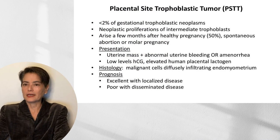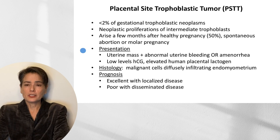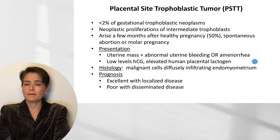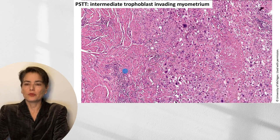The final entity is the placental site trophoblastic tumor, which is quite uncommon — less than 2% of gestational trophoblastic neoplasms. It is a neoplastic proliferation of intermediate trophoblasts, and like choriocarcinoma, may arise a few months after a healthy pregnancy, spontaneous abortion, or molar pregnancy. Patients typically present with a uterine mass, abnormal uterine bleeding, or amenorrhea. There may be a small increase in HCG, but the key diagnostic marker is human placental lactogen. Microscopically, we see malignant cells diffusely infiltrating the endomyometrium. Prognosis is excellent with localized disease but poor with disseminated disease. The histologic appearance shows smooth muscle bundles of the myometrium with invading intermediate trophoblasts.